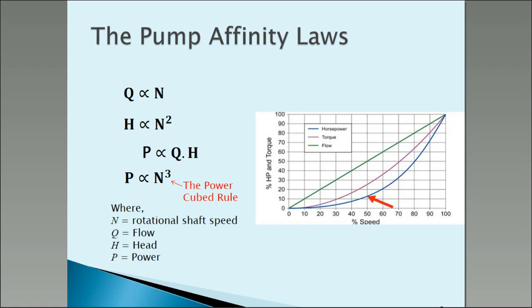Looking at the graph, the flow is proportional to speed — a straight line. The power is proportional to speed cubed, which is really good news. You can see with that red arrow: if you could halve the speed, you're going to have an eighth of the power you did to begin with. Some really big theoretical energy savings.